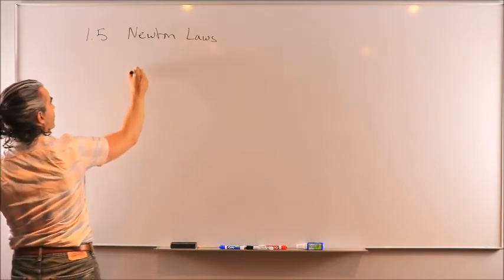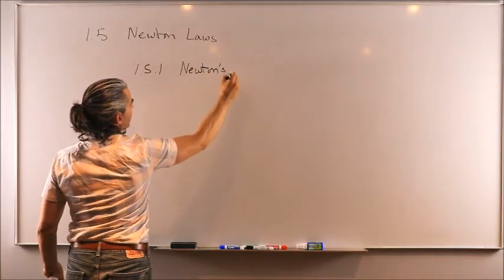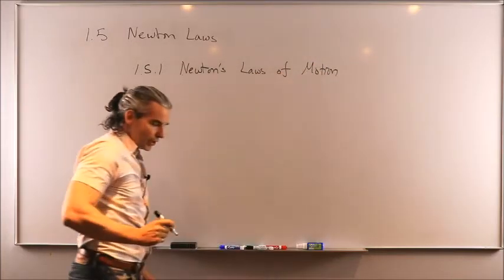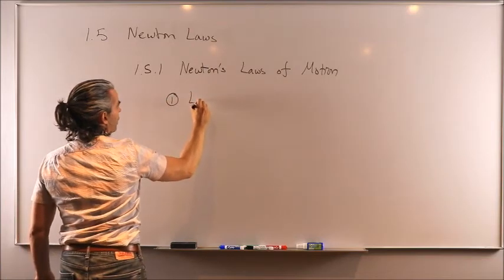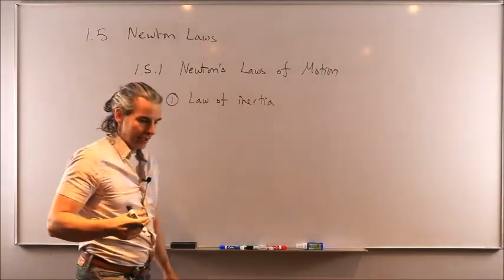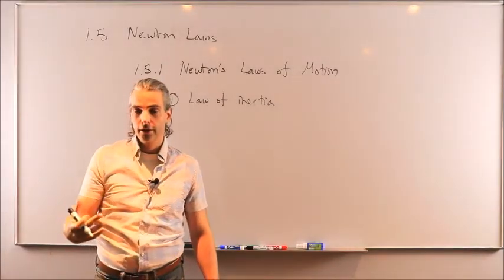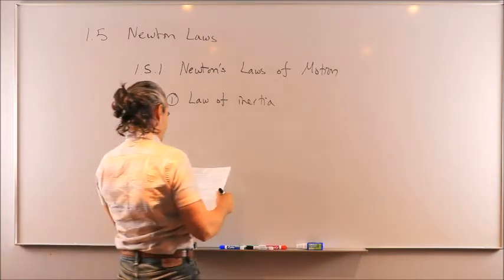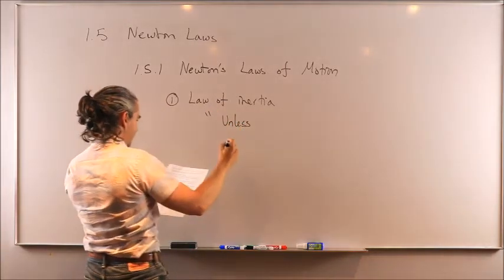So first up, we have in section 1.5.1, Newton's laws of motion. There are three laws of motion derived by Newton. The first one is known as the law of inertia. That law says that unless being acted by an external force, a particle in motion will remain in that motion without deviation, will remain in rectilinear motion. Let me just write it down for you for completeness.